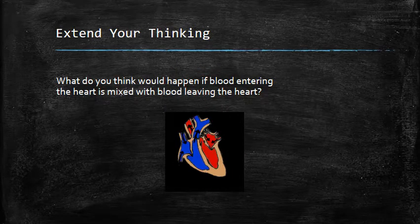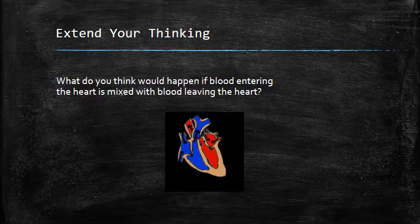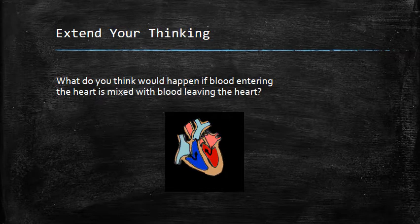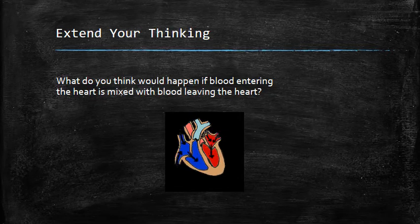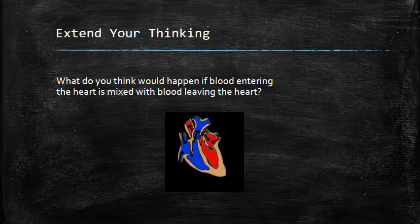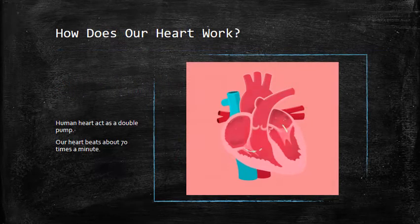Now, extend your thinking: what do you think would happen if blood entering the heart mixed with blood leaving the heart? Oxygen-rich blood would mix with oxygen-poor blood. In this case, all waste materials would mix into the blood and the cells of our body would not get proper oxygen and food — a person may even lead to death.